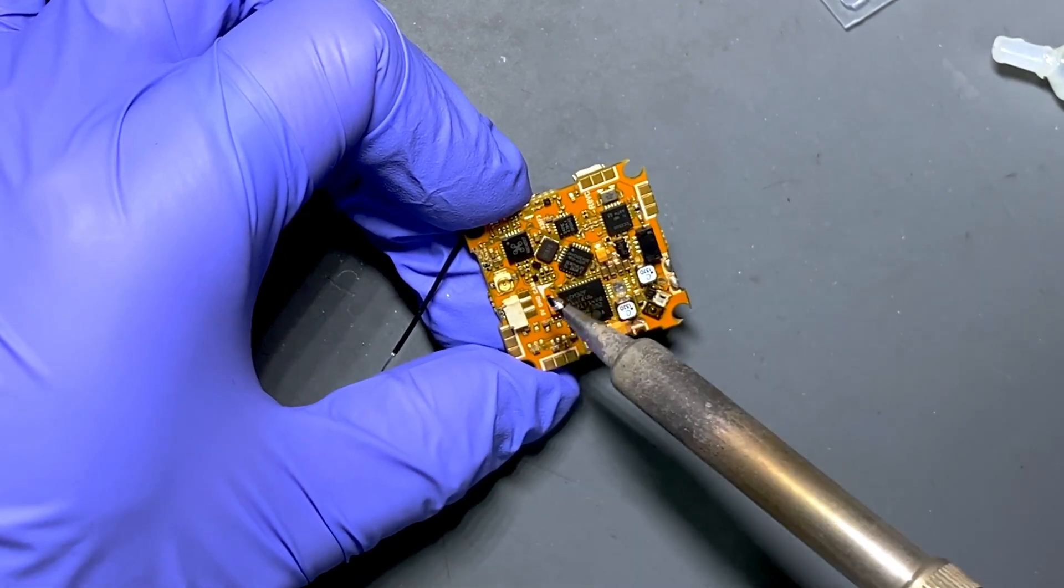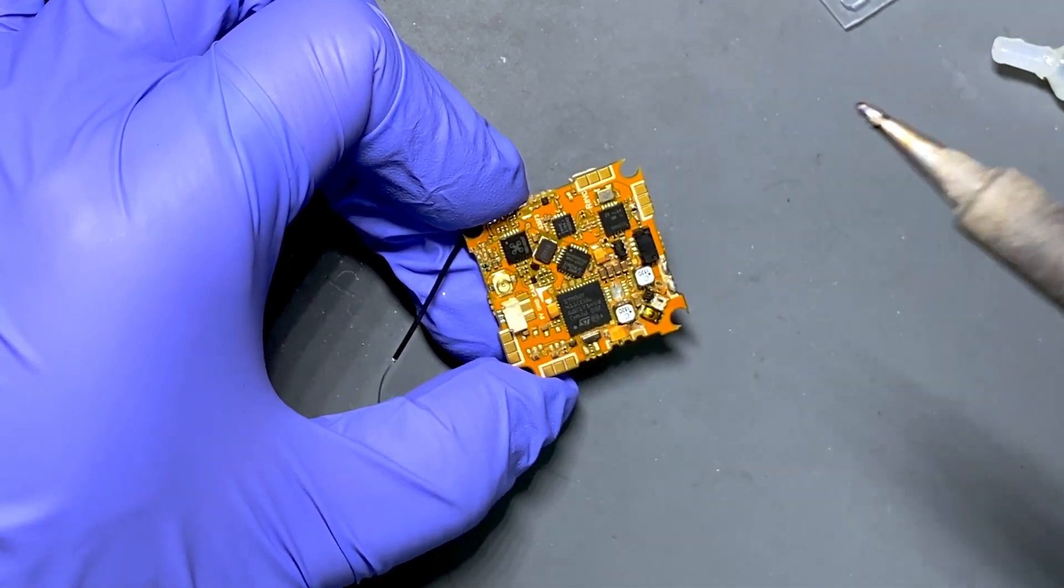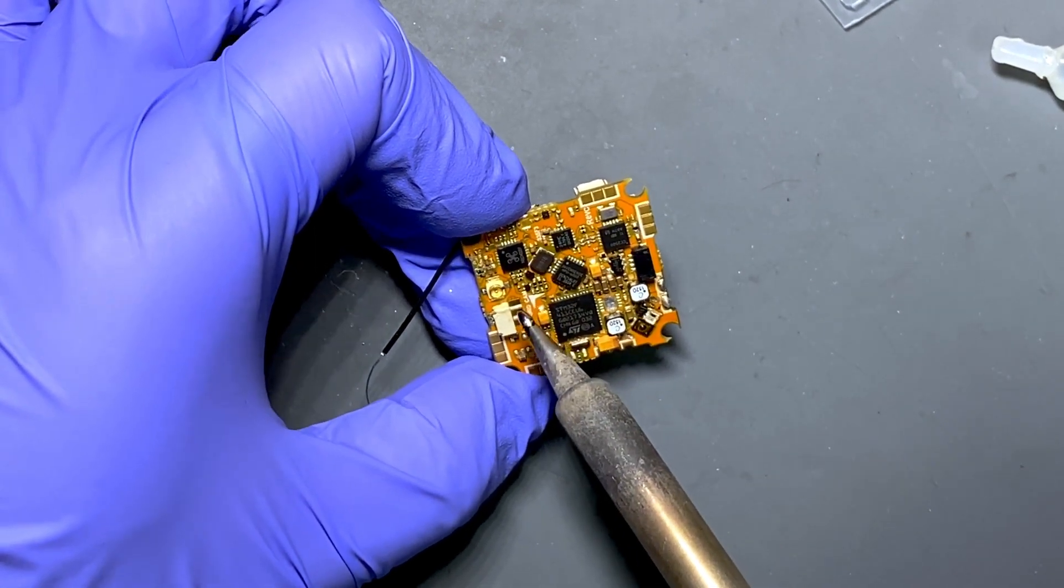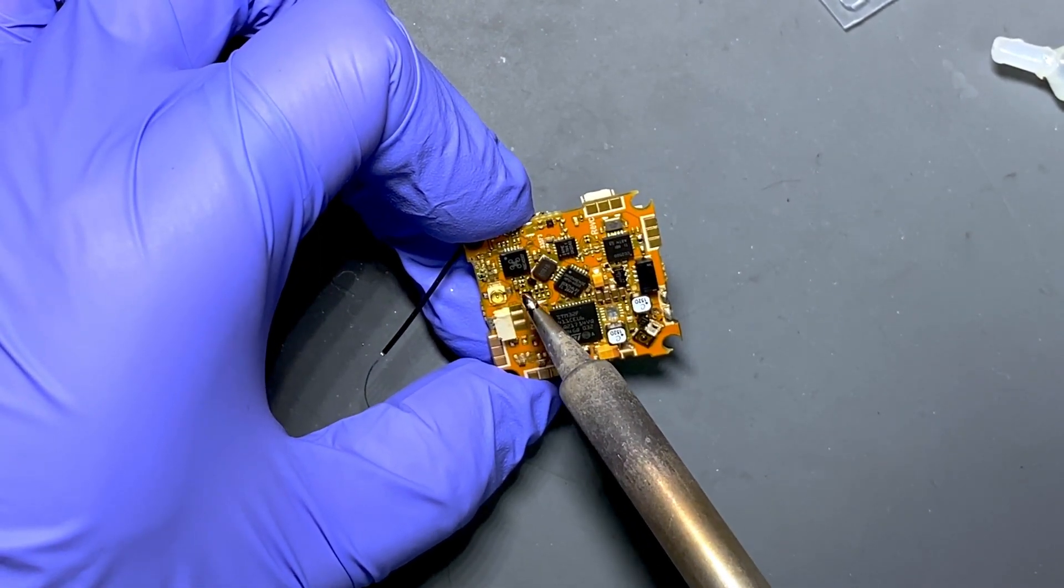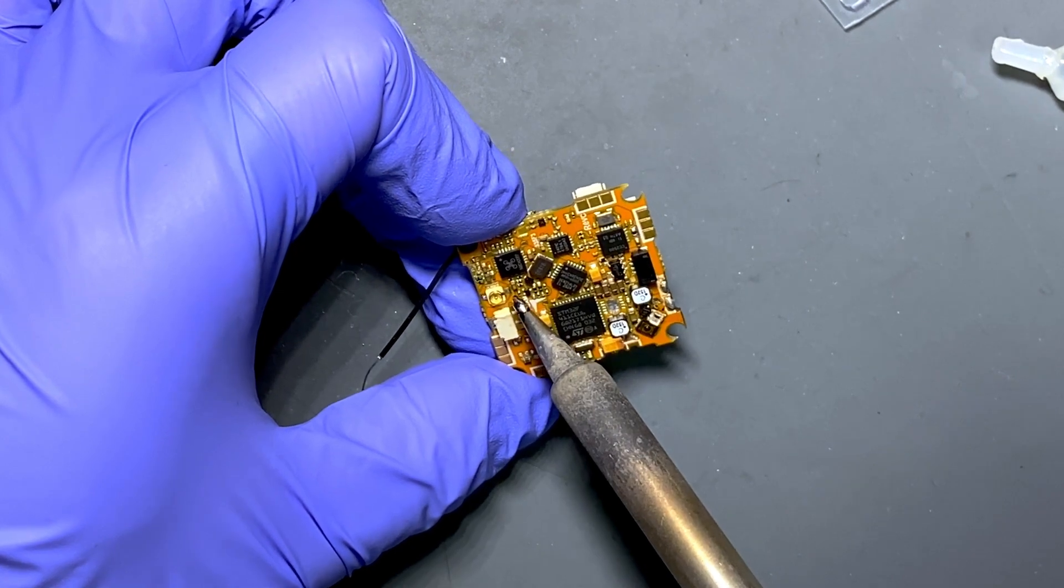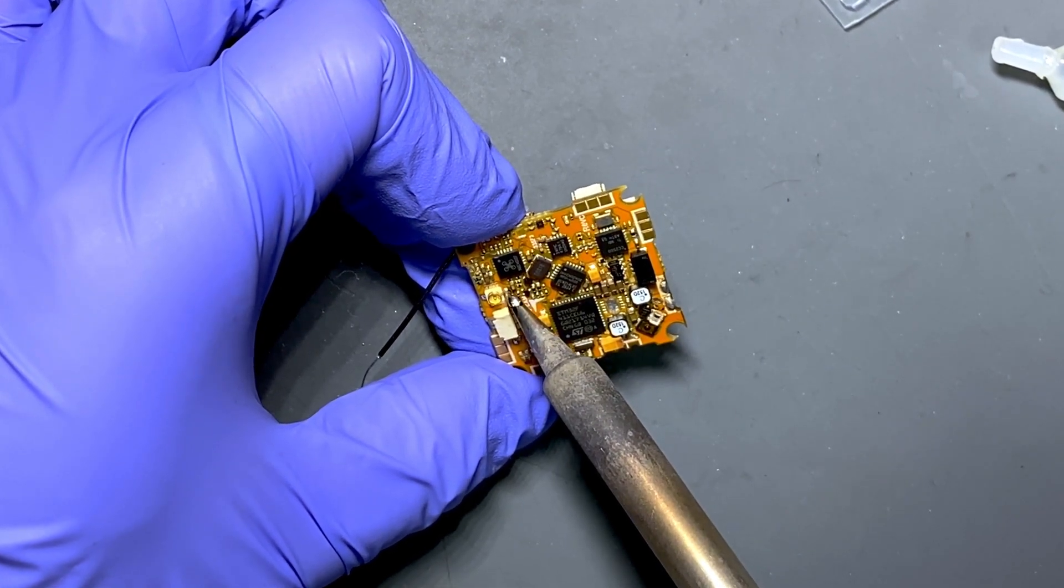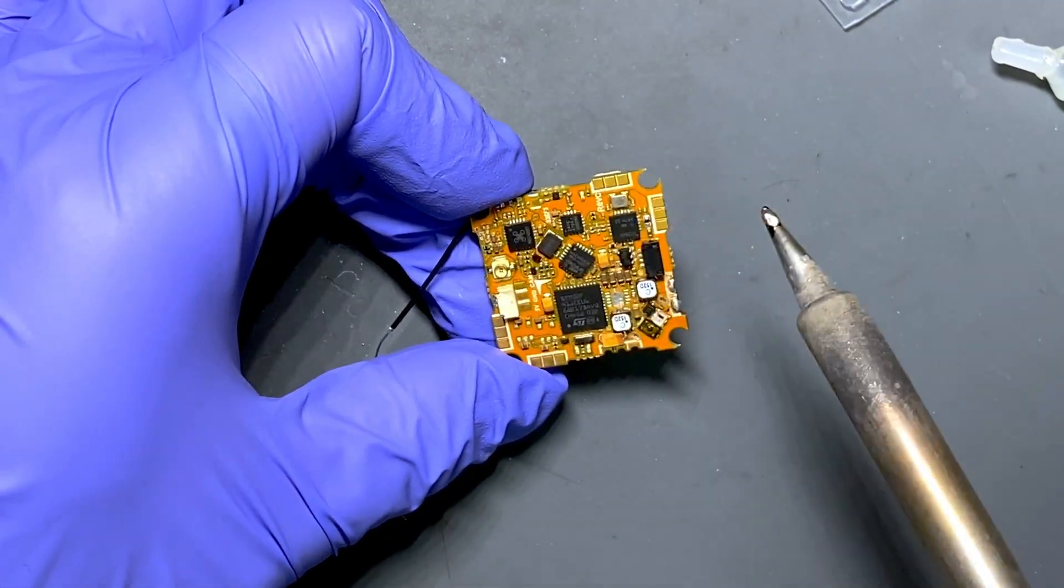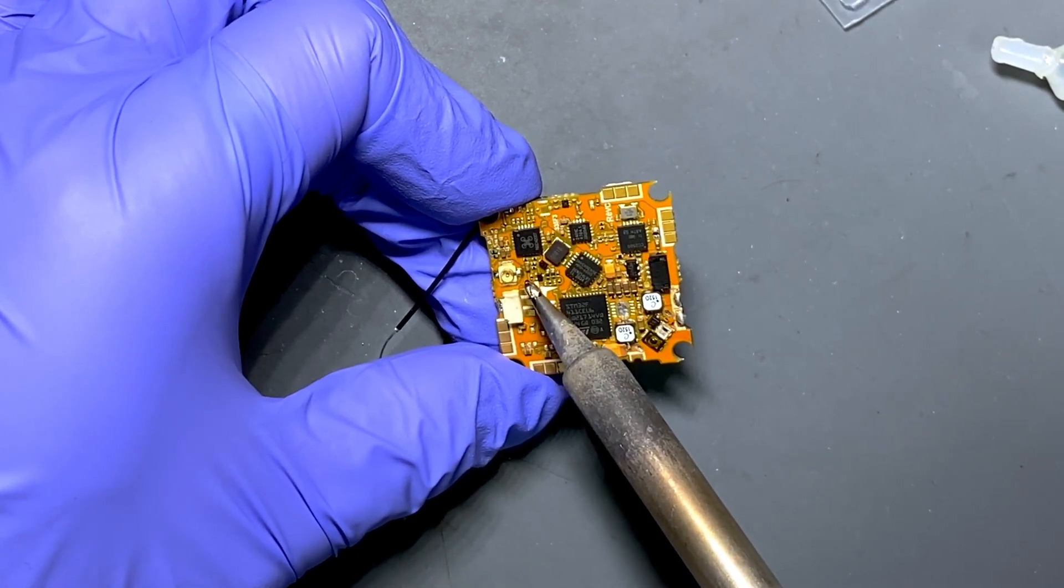So when you do this side, make sure you are using the tip of your soldering iron and make sure you don't shake your hand. It's very difficult. See, now I applied a little bit solder on this edge.